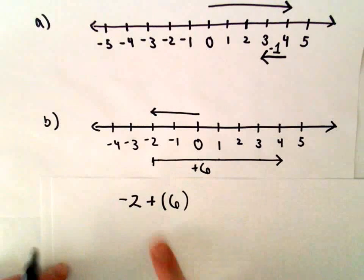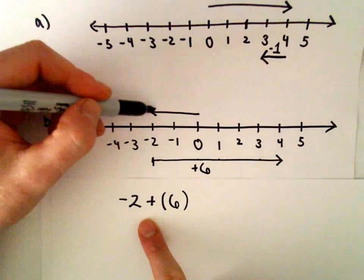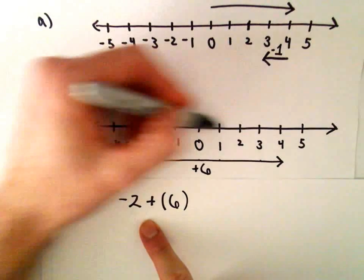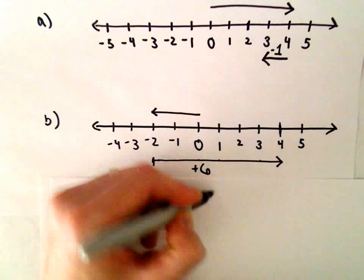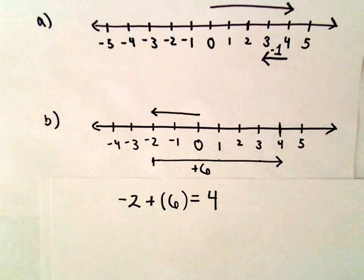As you can see from the number line, if we go two units to the left and then add six units to that, that puts us at positive four.